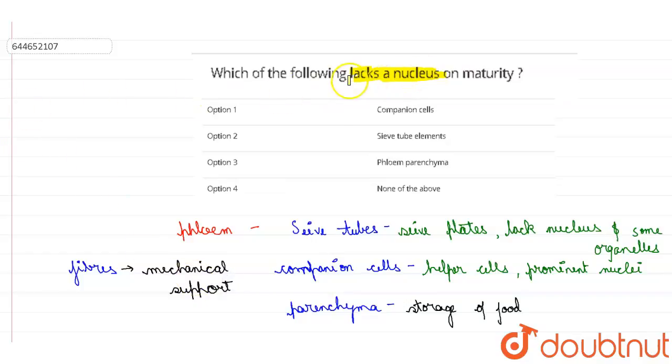So now if we come back to our question, what our question was saying: which of the following lacks a nucleus on maturity? And just now I told you these sieve tubes lack nucleus at maturity. So the correct option will be option 2, which is sieve tube elements which lack nucleus at the maturity. I hope it is clear to you, thank you very much.